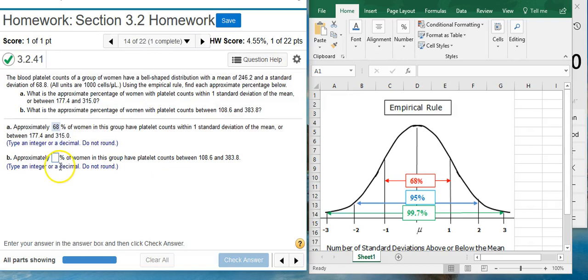Now, the approximate percentage of women in this group have platelet counts between 108.6 and 383.8. Well, this would be really easy if they gave us the number of standard deviations as they did in the previous part of the problem, but here they don't do that. So, what we're going to have to do is figure out how many standard deviations are between these two numbers that they give us here.